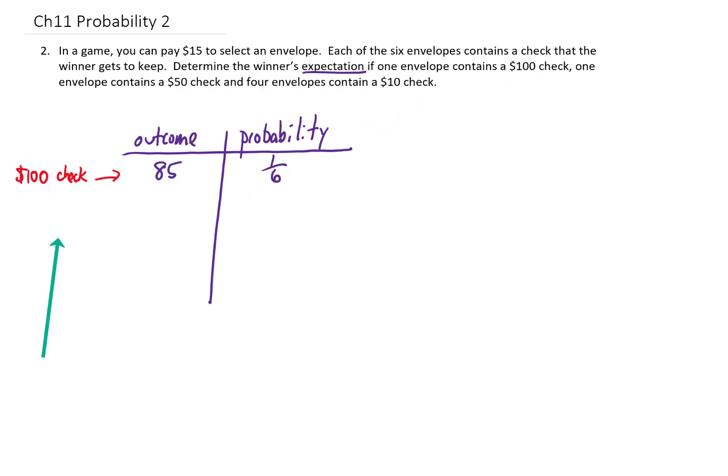The next possible outcome is that we get the $50 check. Again, we paid $15 to get that $50 check, so ultimately we only made $35 on the deal. Again, there is only one envelope that contains $50, so our probability is going to be one in six.